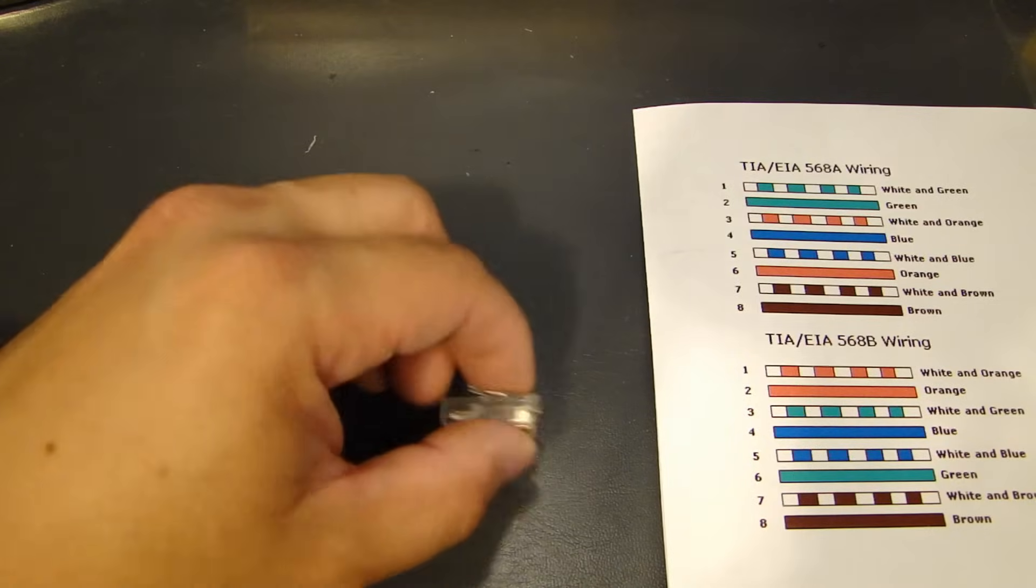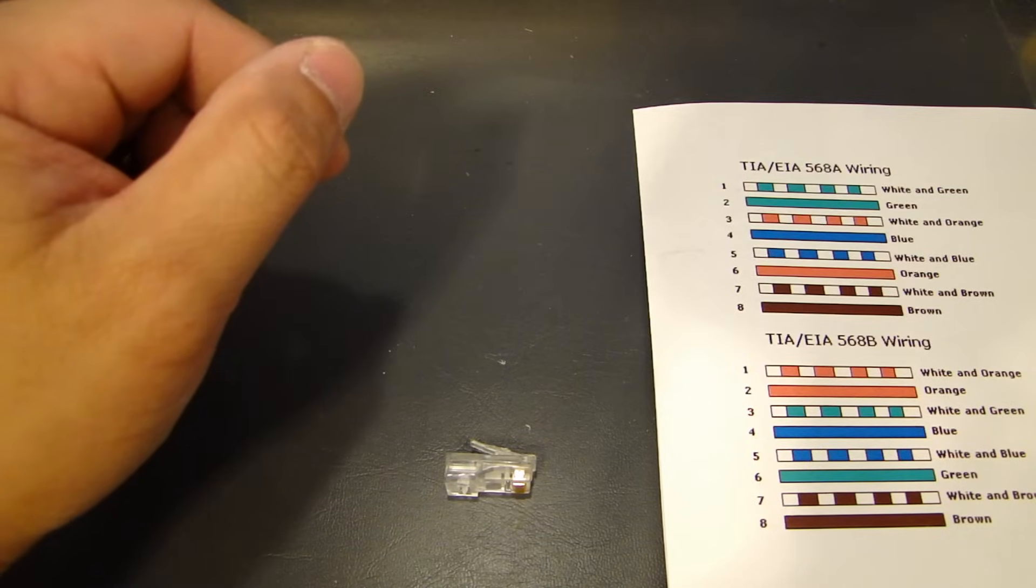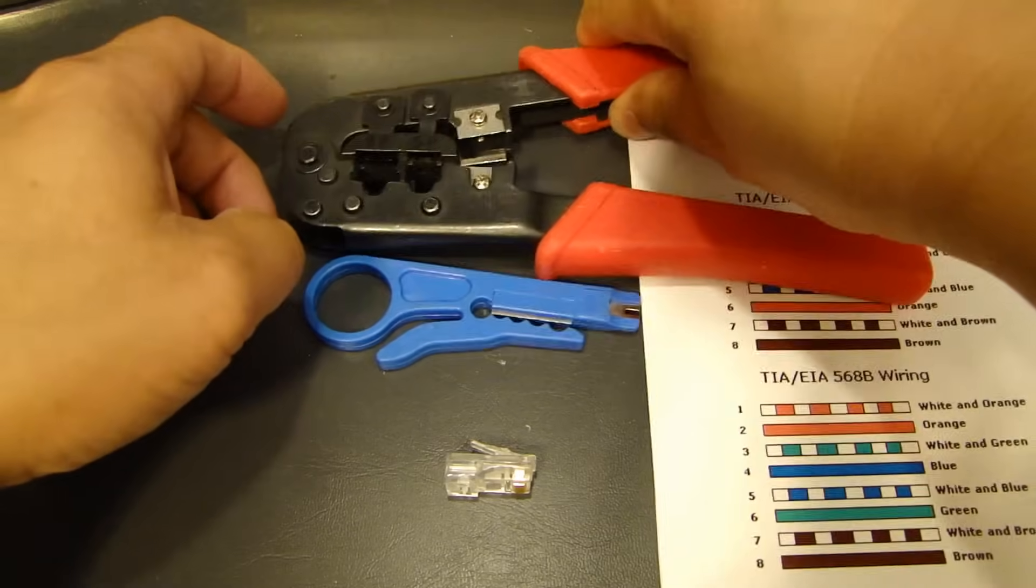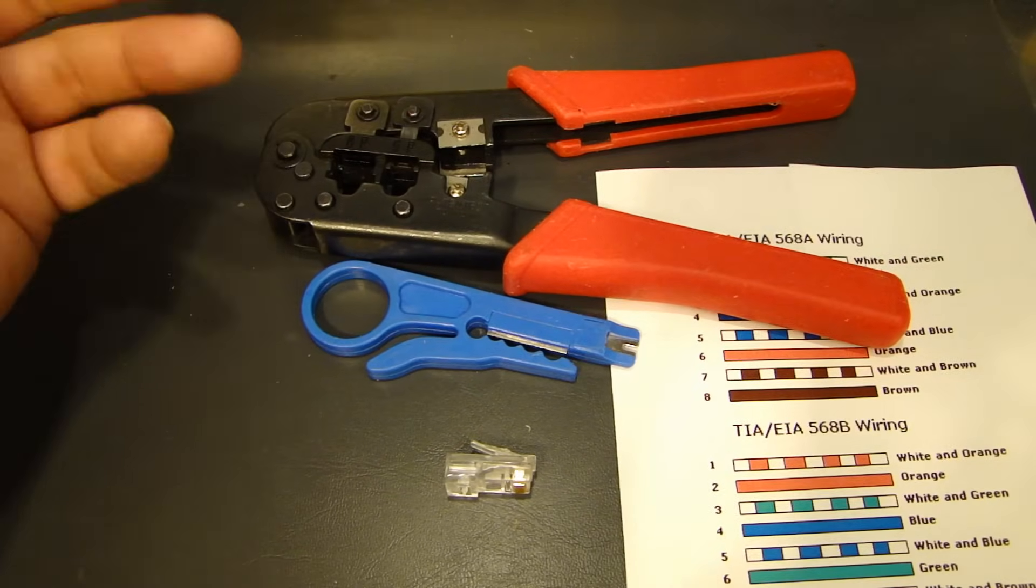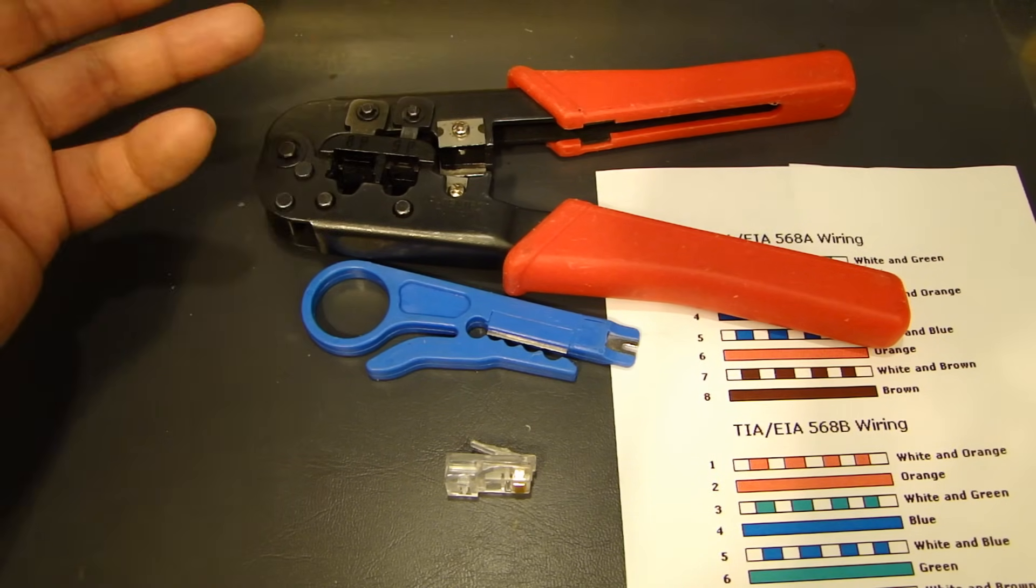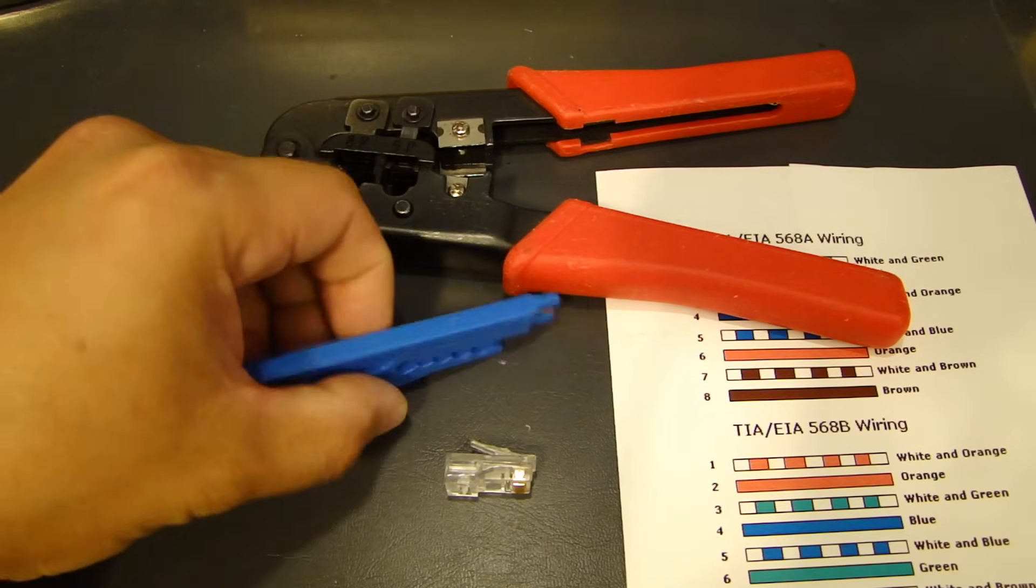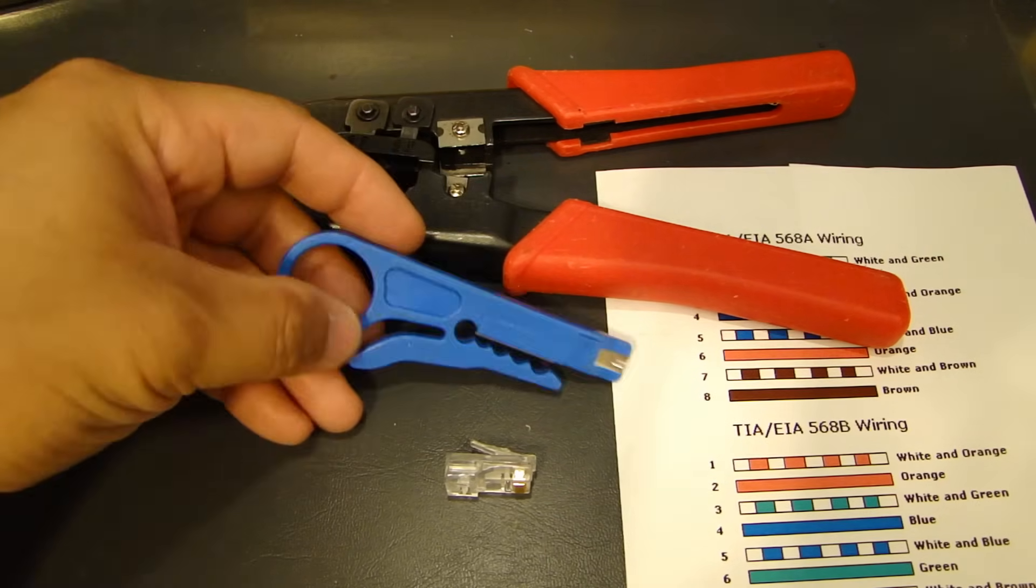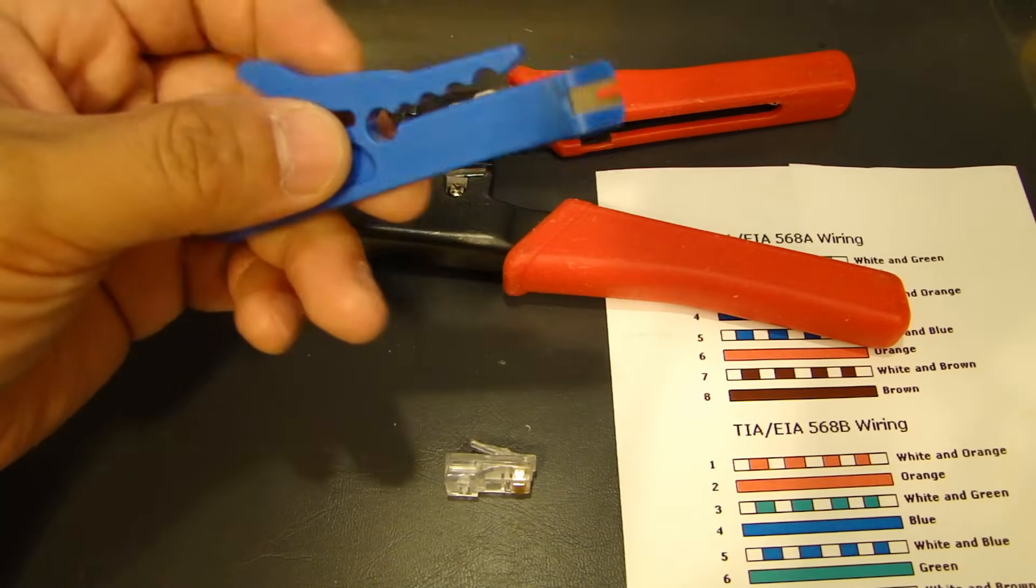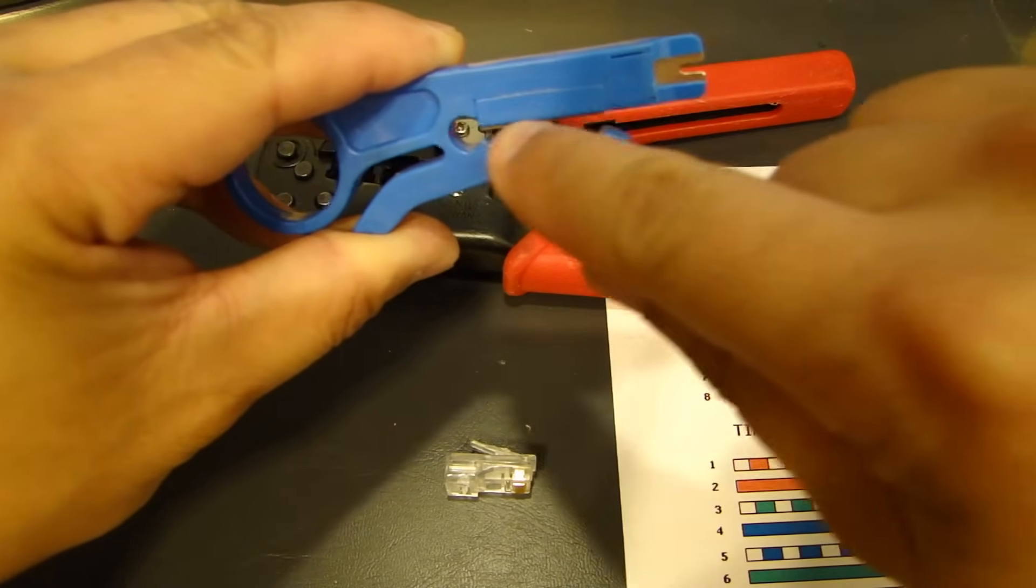Now, a couple of things that you'll need to make a Cat5 cable is you'll need a wire stripper and also a crimper. These are very inexpensive. You can buy these at most home hardware stores. I think RadioShack still sells these online. If you have like Fry's Electronics nearby, you can get it from them. Now, this tool is basically a cutter to strip the insulator. There's a blade inside here with different gauges of wire.